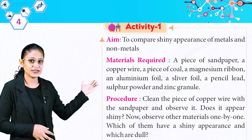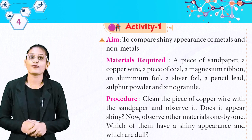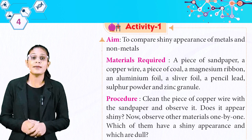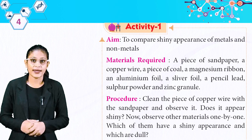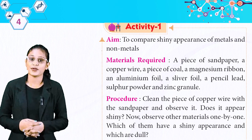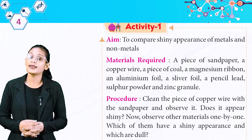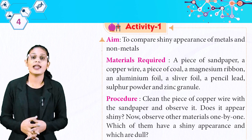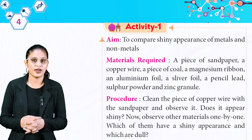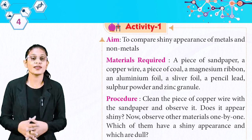Here we have Activity 1. Aim: to compare the shiny appearance of metals and non-metals. Materials required: a piece of sandpaper, copper wire, a piece of coal, a magnesium ribbon, an aluminium foil, a sulfur foil, a pencil lead, sulfur powder and zinc granule. These are the things you need to perform this activity.